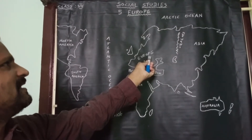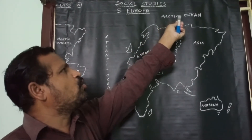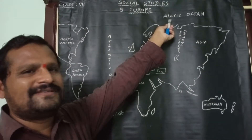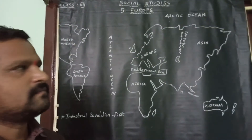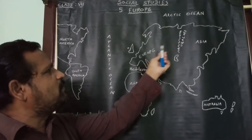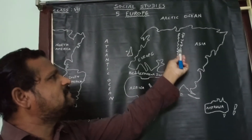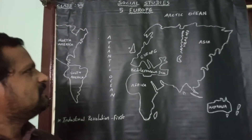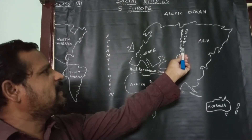Now we discuss the boundaries of Europe continent. Europe continent is bordered by the Arctic Ocean on the north. This ocean is frozen most of the year.